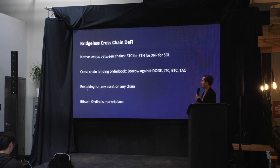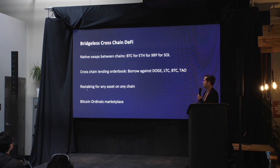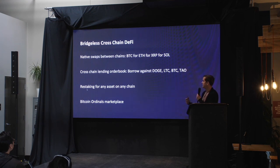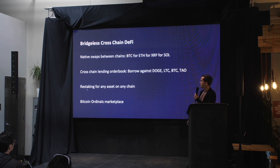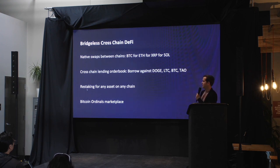Zooming in on bridgeless cross-chain DeFi, native swaps are going to be quite important — you can go from any asset on any chain to any asset on any other chain: Bitcoin, ETH, XRP, Solana, whatever it might be. One of my personal favorite use cases is cross-chain lending — allowing users to use any asset on any chain, even assets in unique staked states like staked TIA, as collateral on an order book to borrow USDC against it. Truly cross-chain lending is going to be very exciting.